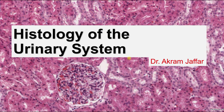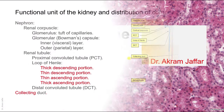Hello, this is Akram Jaffar and in this session I'm going to deal with the histology of the urinary system. The urinary system consists of kidneys, ureters, urinary bladder, and the urethra. So we're going to start with the kidney.